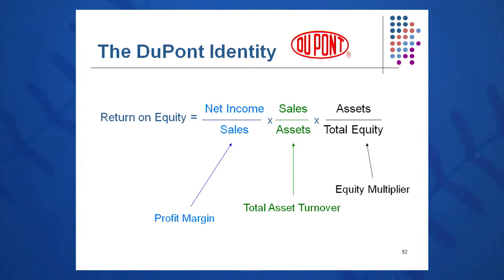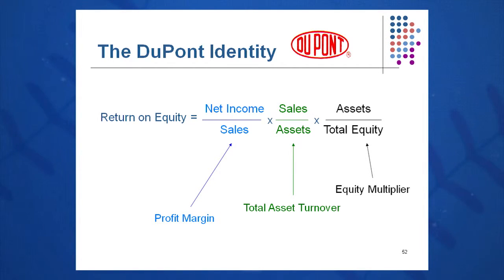Now you have a bunch of things you can change and measure. You can look at your profitability ratio — your net return on sales — and manage it. You can manage your total asset turnover, turning your assets into sales more effectively. Or you can look at your equity multiplier, which is one plus debt to equity, take on a little more leverage, and increase your return on equity.